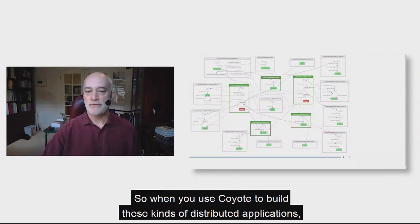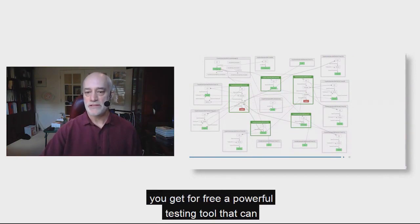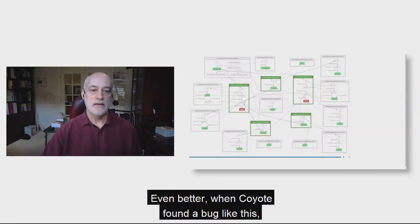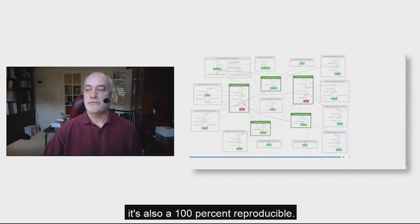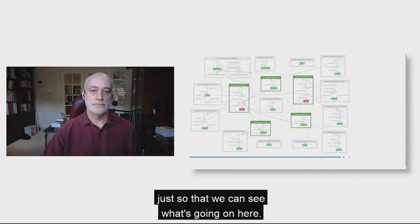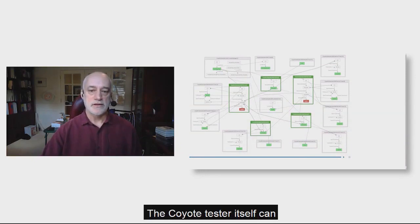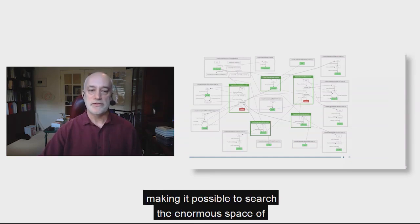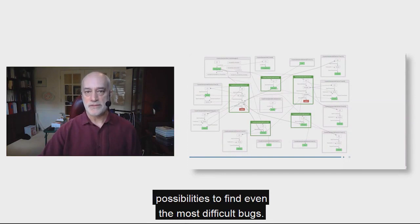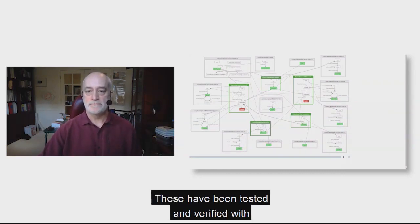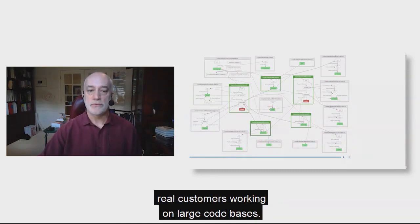When you use Coyote to build these kinds of distributed applications, you get for free a powerful testing tool that can intelligently test your code and find bugs automatically. Even better, when Coyote finds a bug, it's also 100% reproducible. The animation you saw is greatly slowed down just so we can see what's going on. The Coyote tester itself can run hundreds of iterations per second, making it possible to search the enormous space of possibilities to find even the most difficult bugs. Microsoft Research has provided built-in search algorithms to help narrow down the search, tested and verified with real customers on large code bases.